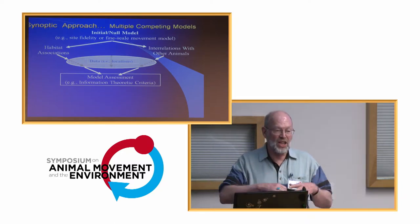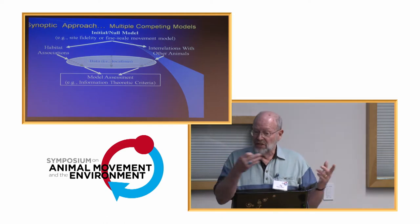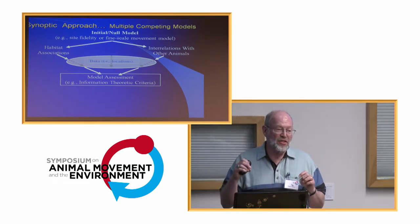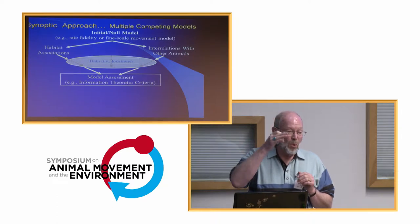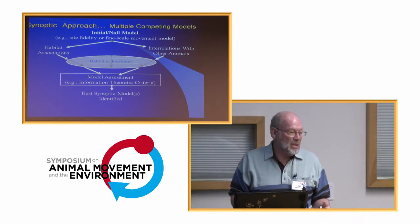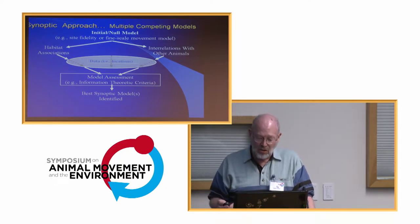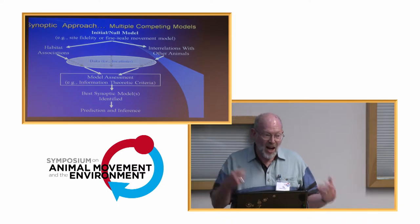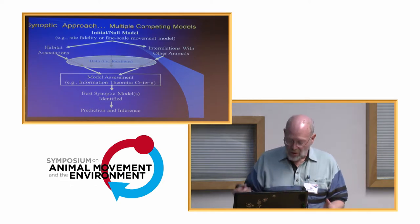We use an information-theoretic approach to assess multiple models incorporating what we think are important hypotheses about what might be driving that animal's pattern of habitat association. We use tools like Akaike's information criteria — AIC — to identify the best synoptic model or set of models. Often there are multiple models that are supported. We then use that information to make predictions and inference about what is liable to happen in the future — commonly to make good management decisions for conservation.